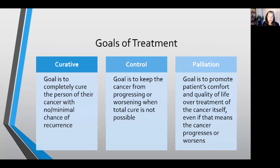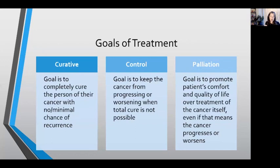And then there's the goal of palliation. In this, the goal is to promote the patient's comfort and quality of life over the treatment of the cancer itself, even if that means the cancer progresses or worsens. This often becomes a goal of treatment in cancers that are very aggressive or diagnosed very late, where we know that treatments will not cure or even control the cancer very well, and the side effects of the treatments themselves may diminish the patient's quality of life. So the goal becomes to manage the patient's quality of life and symptoms rather than treating the cancer itself.